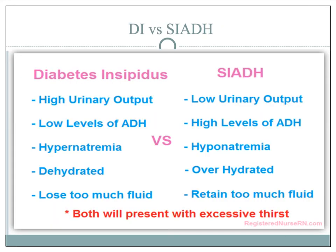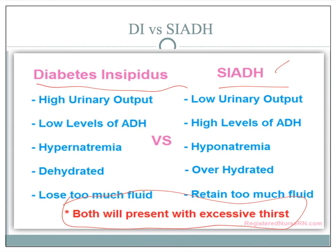This slide shows the difference between the two conditions. In most cases, they are absolutely the opposite. Interestingly, both patients will have excessive thirst. In SIADH, they feel thirsty because they are diluted, but they can't have any fluid. You can have them chew gum, suck on ice chips, or suck on hard candy to help with their thirst. For diabetes insipidus patients, you can give them some fluid to fix their thirst. Frequent mouth care and hard candy or chewing gum can also help with dry mouth.